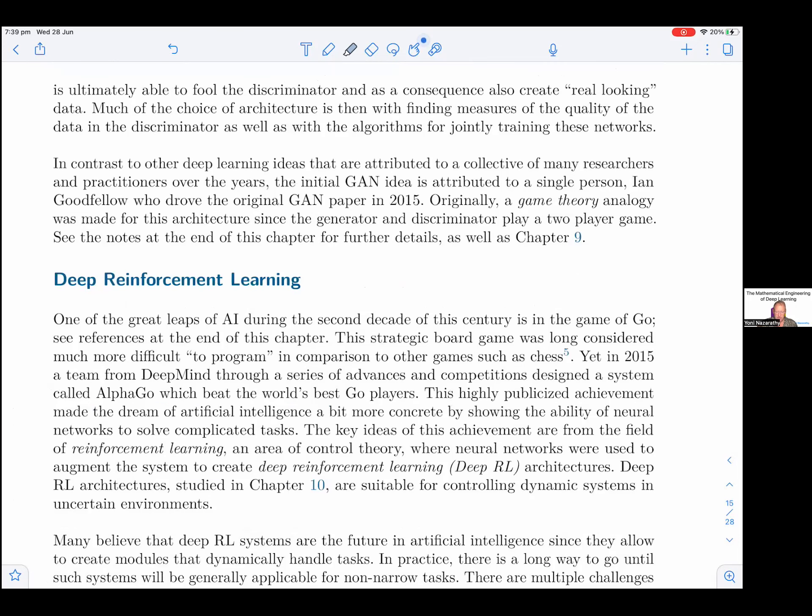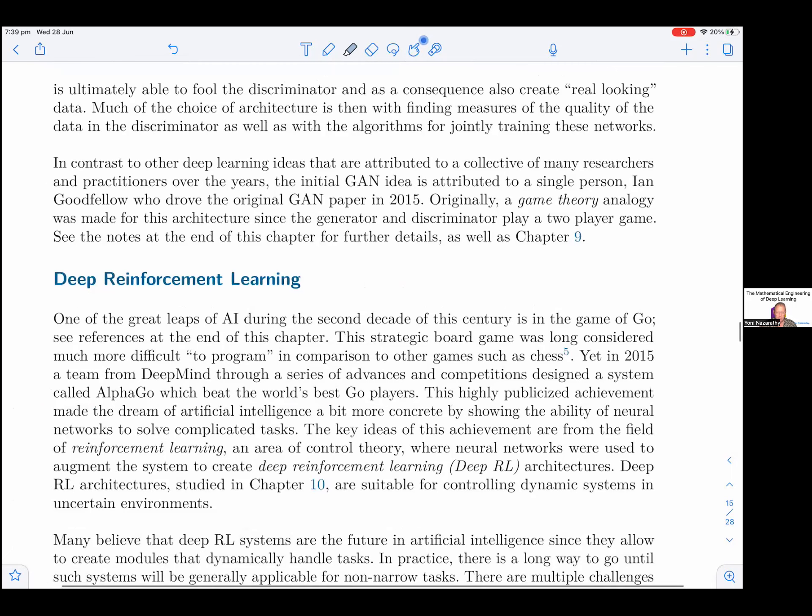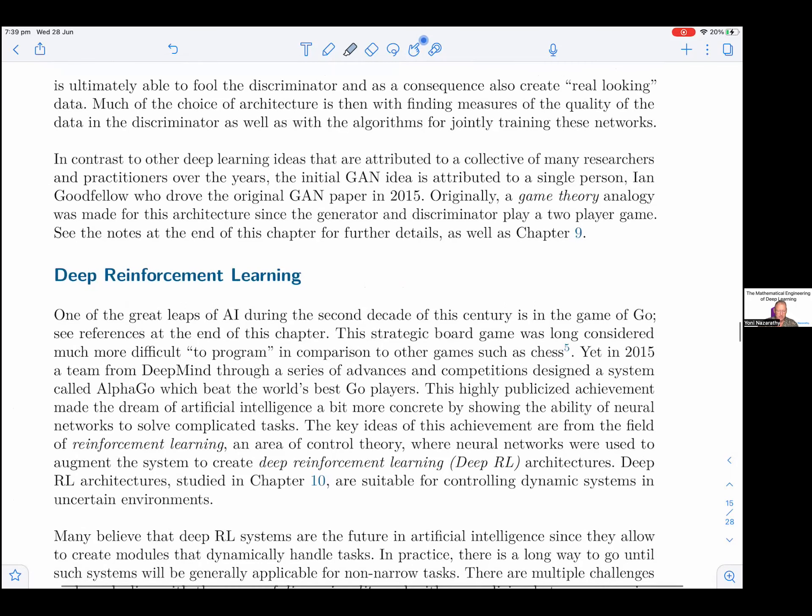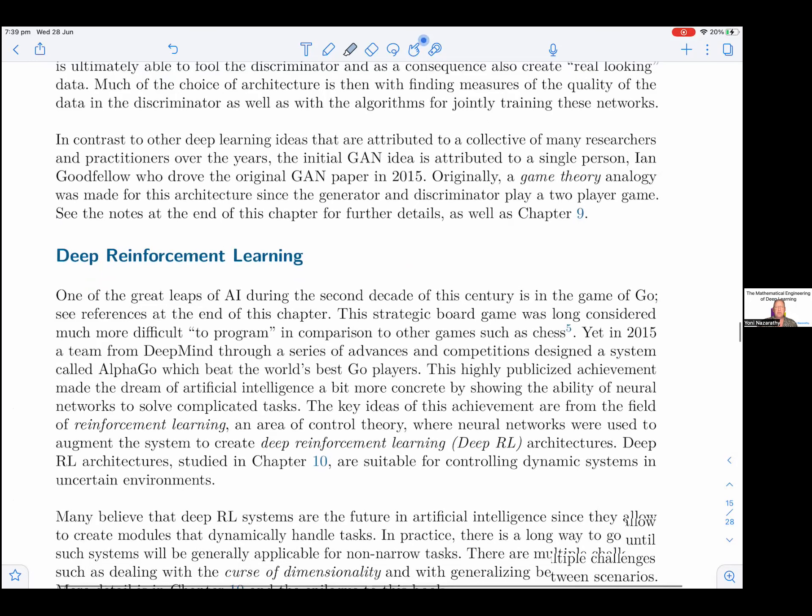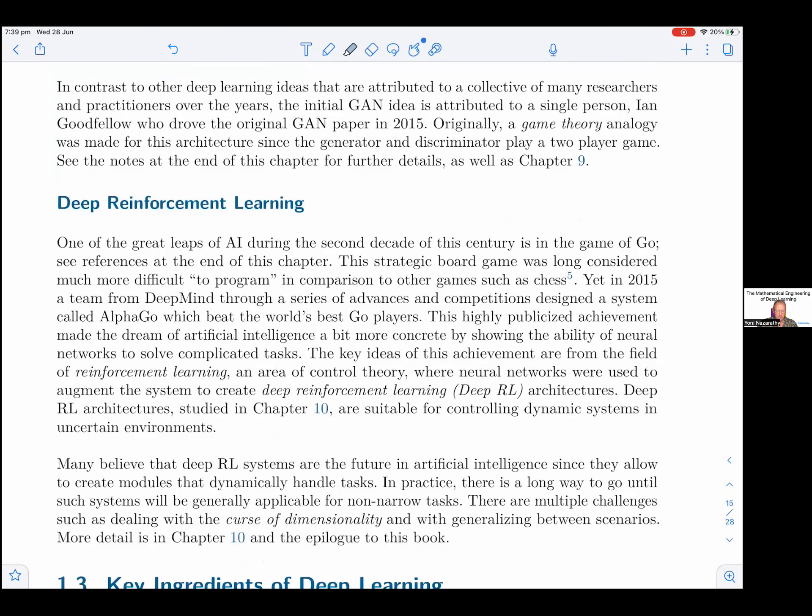Much of the choice of architecture is then with finding measures of the quality of the data in the discriminator, as well as with algorithms for jointly training these networks. In contrast to other deep learning ideas that are attributed to a collective of many researchers and practitioners over the years, the initial GAN ideas are attributed to a single person, Ian Goodfellow, who drove the original GAN paper in 2015. Originally, a game theory analogy was made for this architecture since the generator and discriminator play a two-player game. See the notes at the end of the chapter for further details, as well as chapter 8.